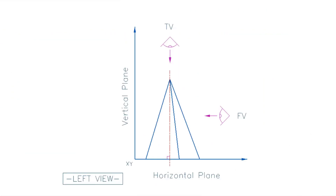Looking at the diagram from the side, this is the left view — the left side of the pyramid. I've drawn in the Cartesian plane to explain a few things. The vertical plane is the imaginary level behind the front view, and the horizontal plane is the imaginary level underneath the top view. They are separated by the XY line, which actually represents both planes.